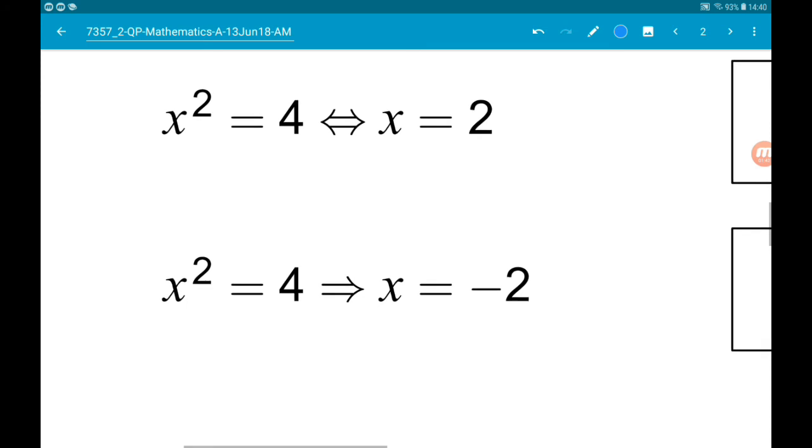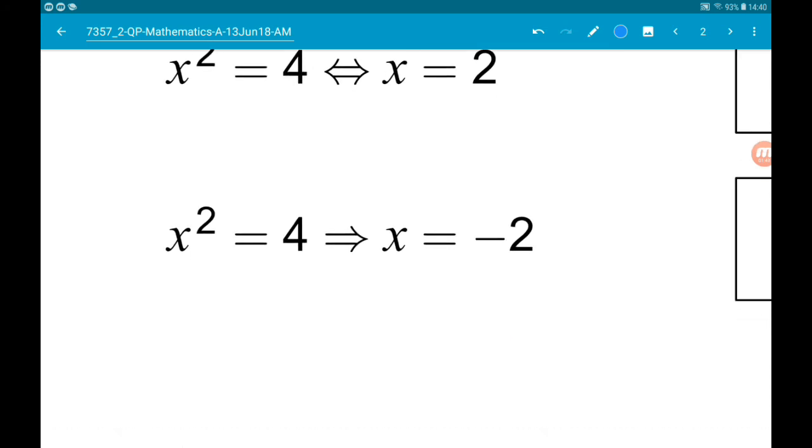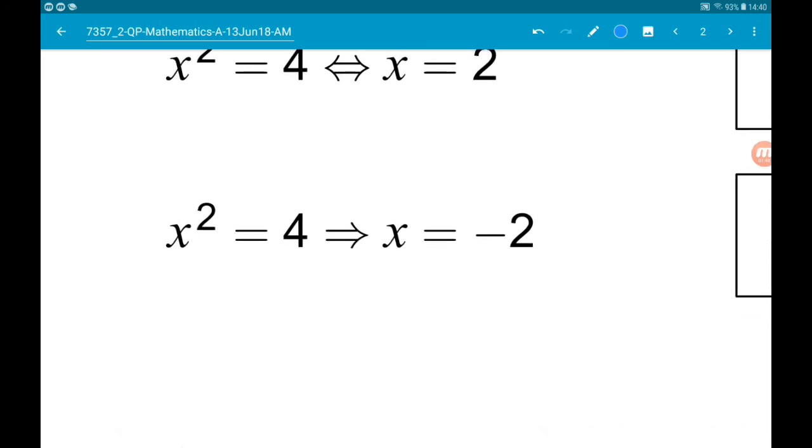And then the final one, if x squared is 4, that means that x has to be minus 2. Not true, x could be positive 2.